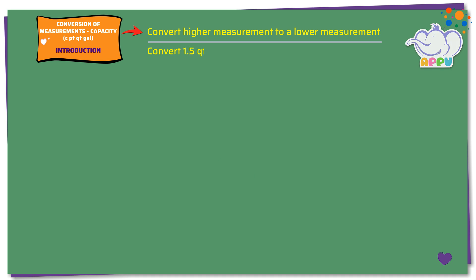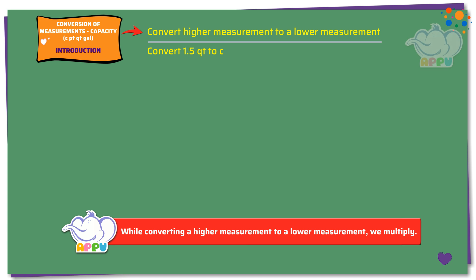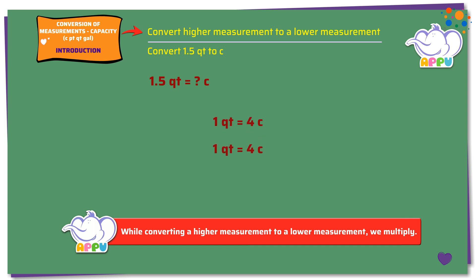Convert 1.5 quarts to cups. Here we need to find how much is 1.5 quarts in cups. We know that 1 quart equals 4 cups. Multiplying both sides by 1.5, we get 1.5 times 1 quart equals 1.5 times 4 cups. 1.5 times 4 equals 6 cups. So, 1.5 quarts equals 6 cups.